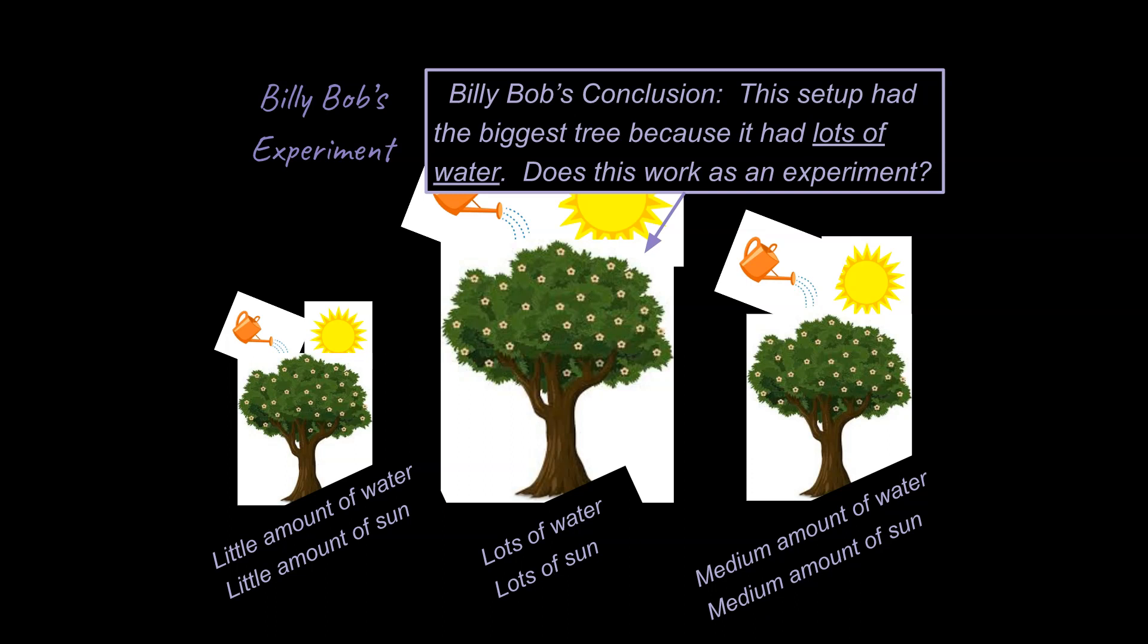And the answer is because we simply don't know. We don't know if this middle tree grew up to be large because it got lots of water, or because it got lots of sun, or some combination of both. This is a bad experiment that is set up in a logically invalid way.